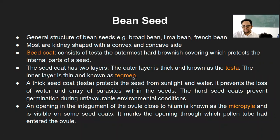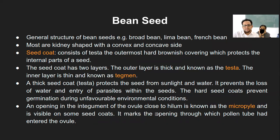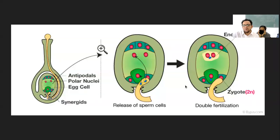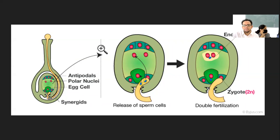Testa and tegmen usually function to allow water absorption from those layers inside. Then there is something called the micropyle — if you remember, micropyle was the structure from which the pollen tube had entered the ovule or the embryo sac and fertilized with the female gametes. The pollen tube enters the embryo sac through the micropyle.